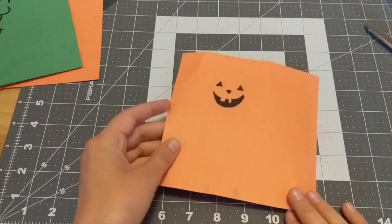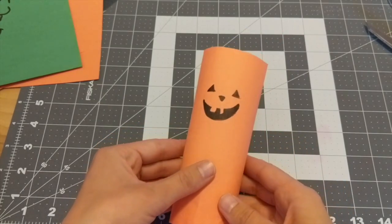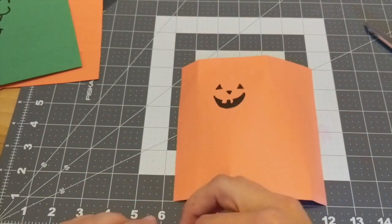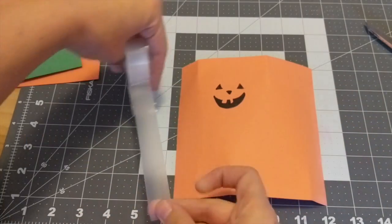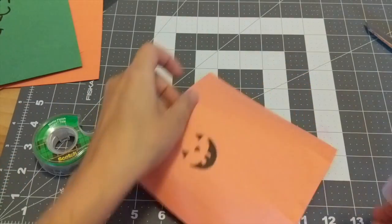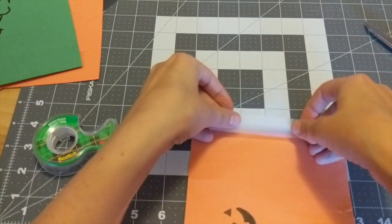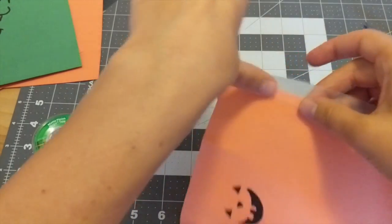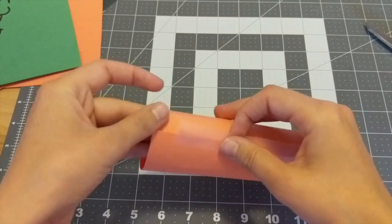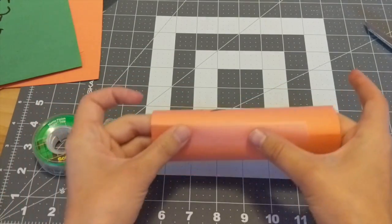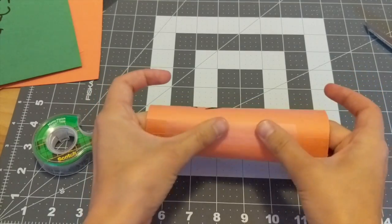Now to put this together, it is pretty simple. You're going to make a little cylinder and tape it together. Now of course, if you had double-sided tape, this would look a little bit nicer, but I didn't want to spend extra money when I had this already on hand.